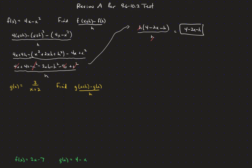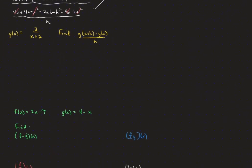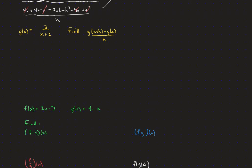Let's try it again with function g. It's got a different challenge because we have a fraction. Our g of (x plus h) is going to be 3 over (x plus h plus 2), minus our g of x, which is 3 over (x plus 2), all over h.